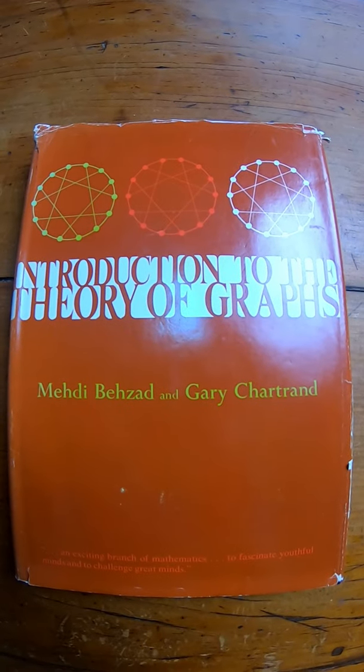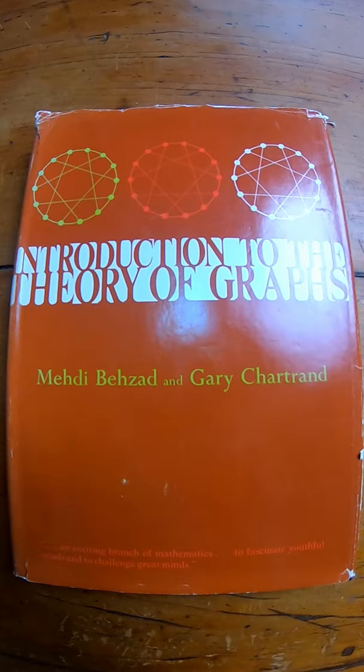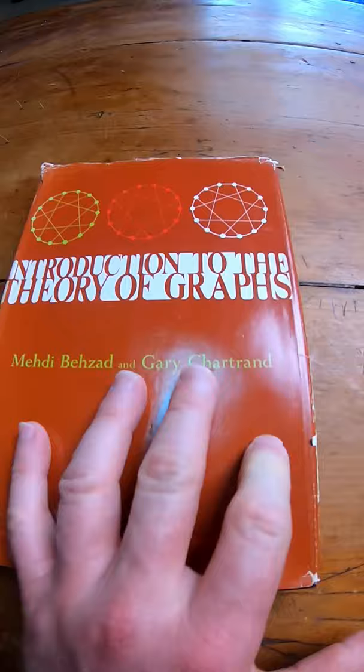Introduction to the Theory of Graphs - this is the Chartrand book. It's supposed to be an introductory book on graph theory, and it's pretty good. You can probably get an old copy for a few dollars.